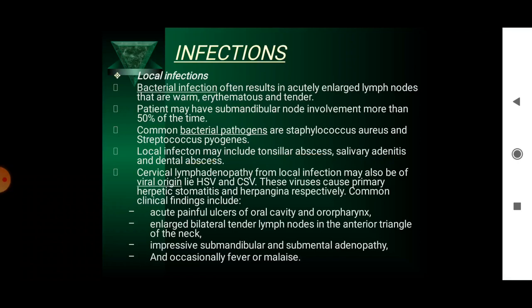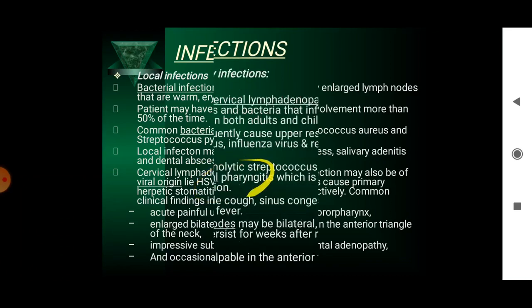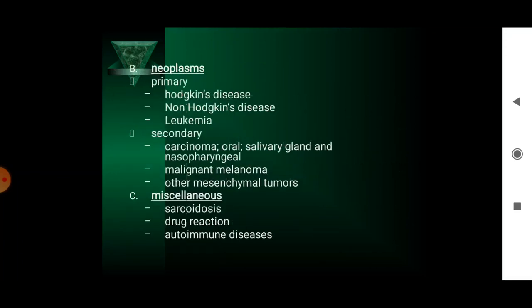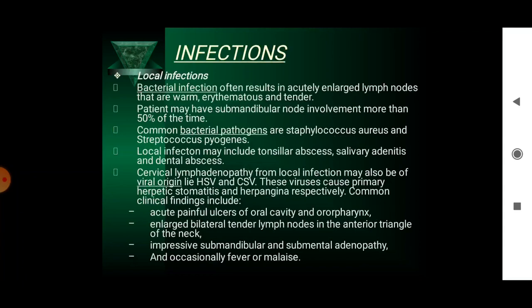Cervical lymphadenopathy from local infection may also be of viral origin in HSV and CMV. These viruses cause primary herpetic stomatitis and herpangina respectively. Common clinical findings include painful ulcers of the oral cavity and oropharynx, enlarged bilateral cervical lymph nodes in the anterior triangle of the neck, submandibular and submental adenopathy, and occasional fever or malaise.